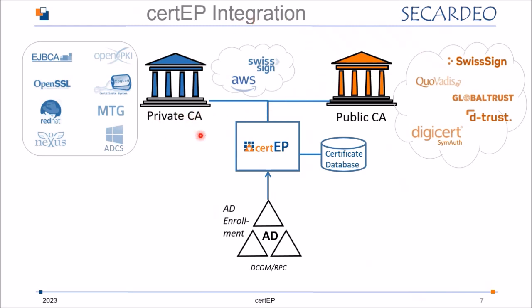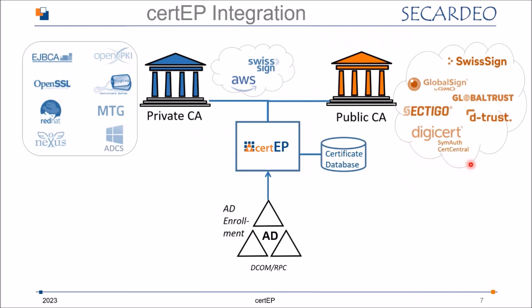We also have connectors for private CAs in the cloud, like SwissSign, and very popular from AWS — the ACM PCA is also connected. For public CAs, we have SwissSign, GlobalTrust, DigiCert, SimOff, and Curvatus — though Curvatus has been acquired by DigiCert so that connector is no longer needed. We offer new connectors for GlobalSign, Sectigo, and the new CertCentral API of DigiCert. So you are flexible to select from these CAs.